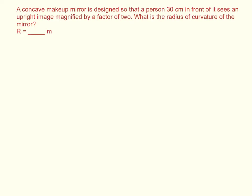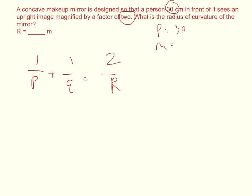I'll start off with my mirror equation. You're going to see really quick that I'm going to have two unknown variables: 1 over P plus 1 over Q equals 2 over R. The person in front of the mirror, so the object distance P, is equal to 30 centimeters. And the magnification is 2x, so M equals 2. I don't know what the radius is, which is what I need to find, and I also don't know what the image distance Q is, so I have to solve for that using the magnification.